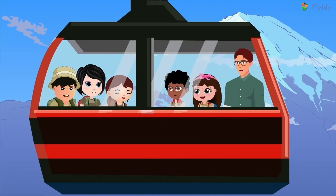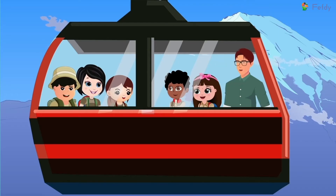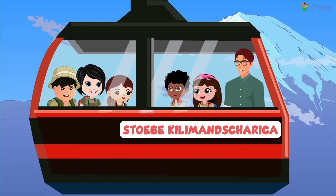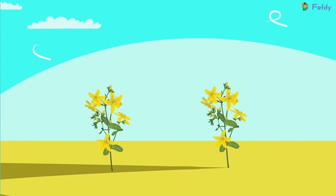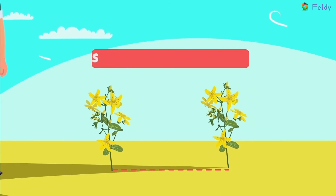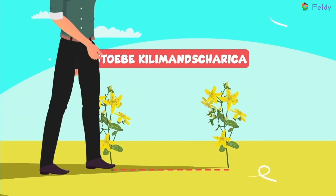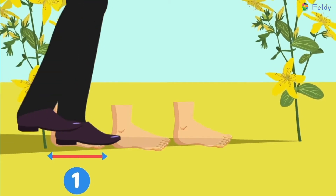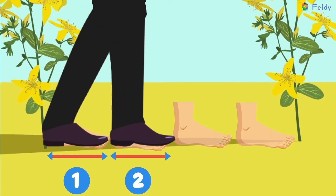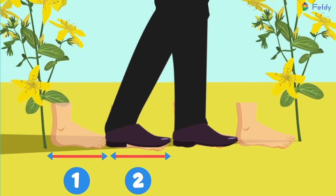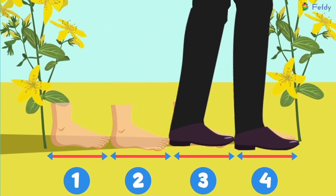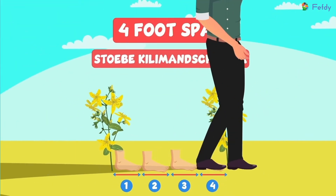How can we measure things using foot span, Dad? Now shall we see an example for foot span with stoebe kilimansharika? Yes, Dad. We shall see the distance between the plant stoebe kilimansharika. One, two, three, four. Four foot spans.